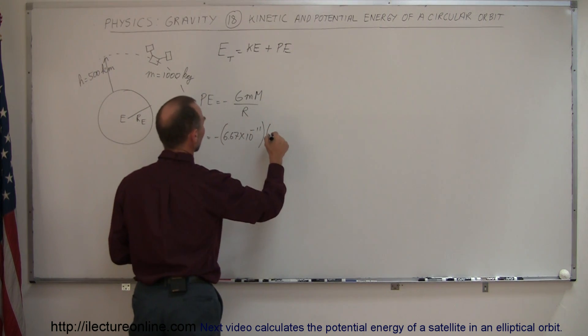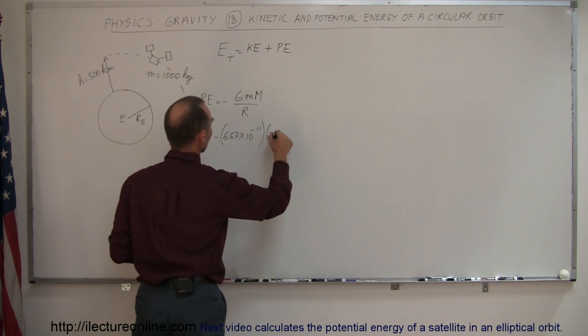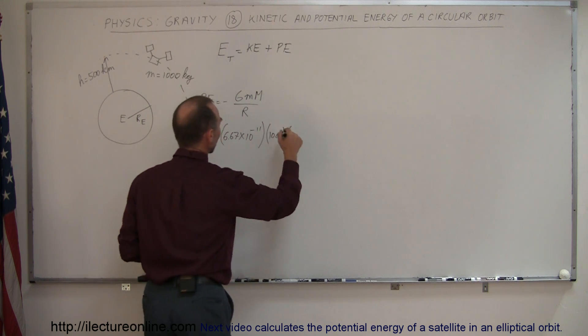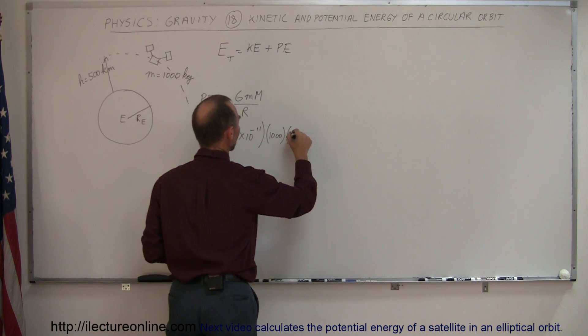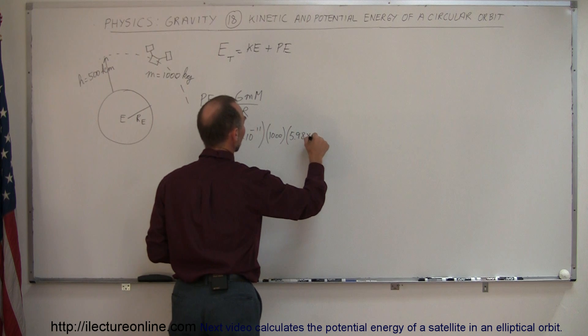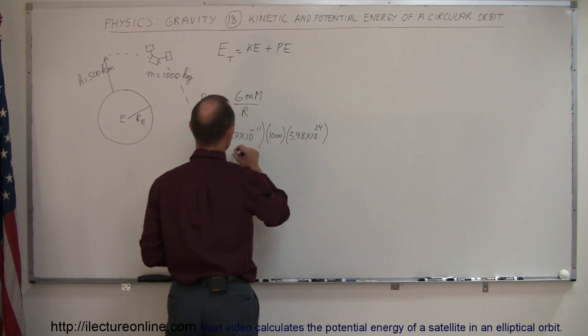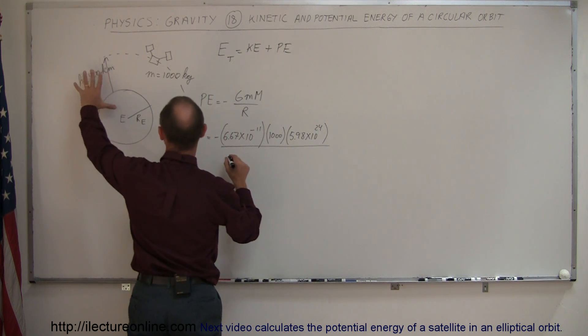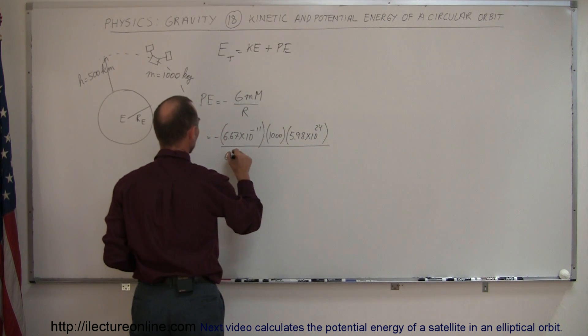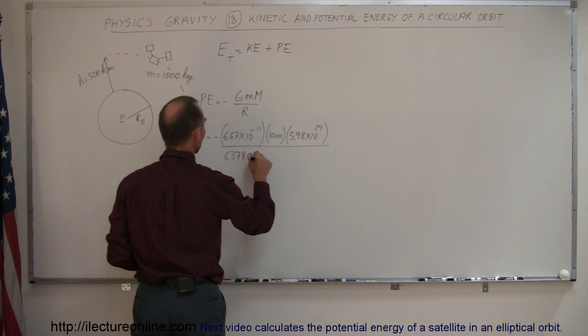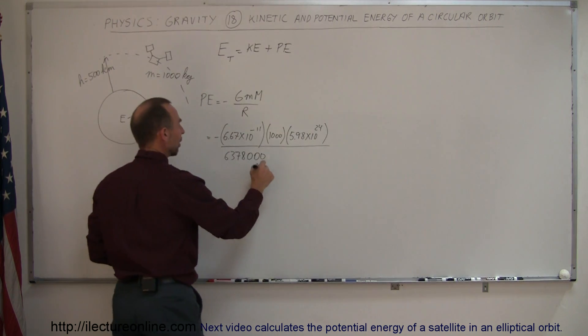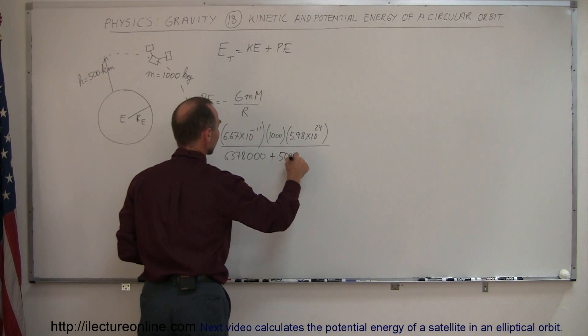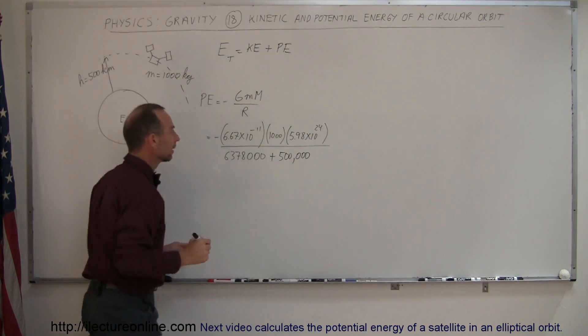Times the mass of the satellite, which is a thousand kilograms, times the mass of the earth, which is 5.98 times 10 to the 24th, all divided by the radius of the earth. Now that's going to have to be the total radius of the orbit, not just the earth, so it's 6,378,000, that's the radius of the earth, plus the radius of the orbit.